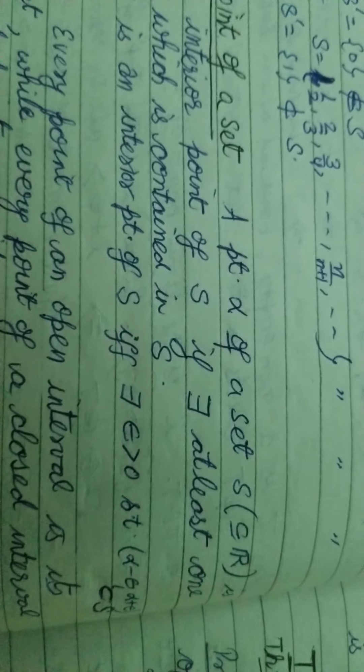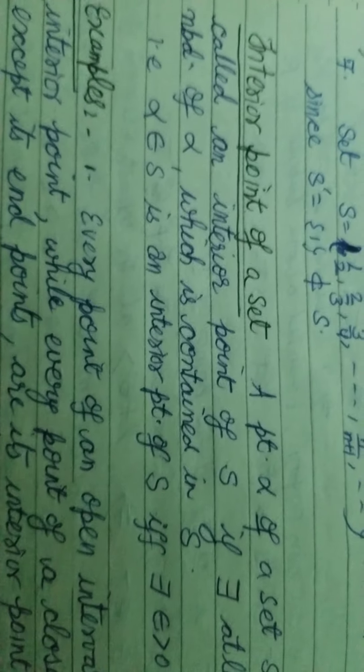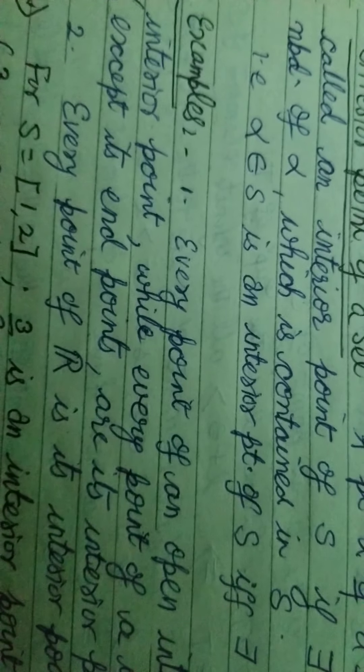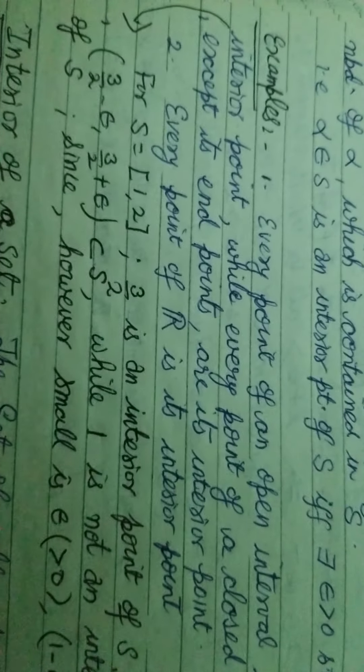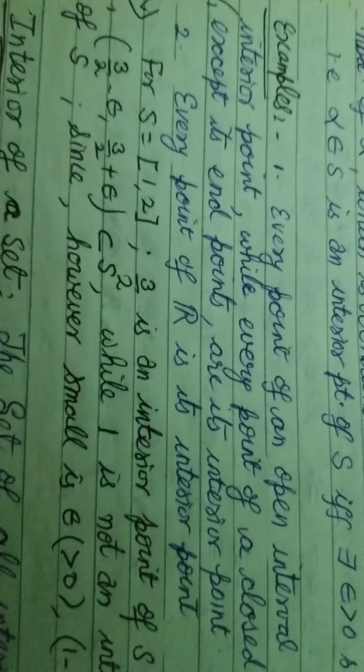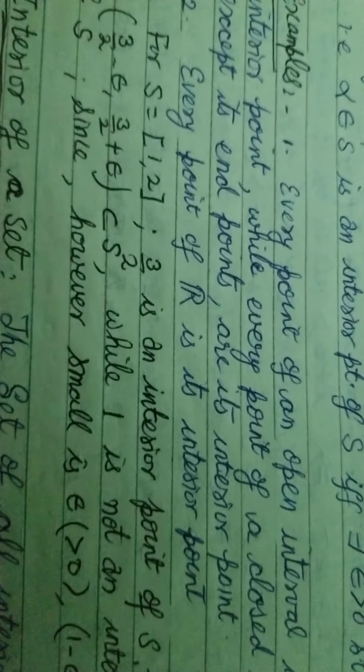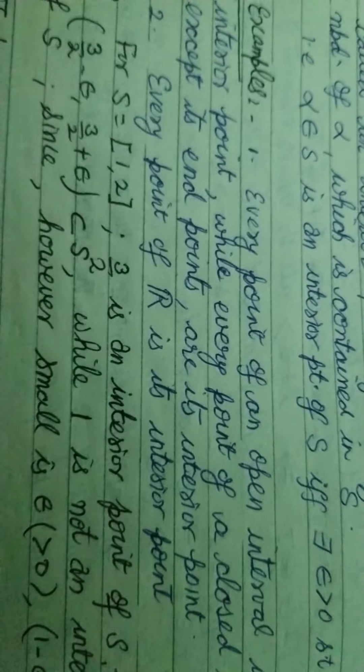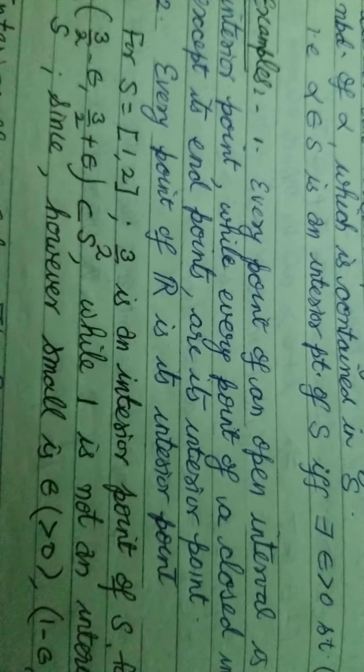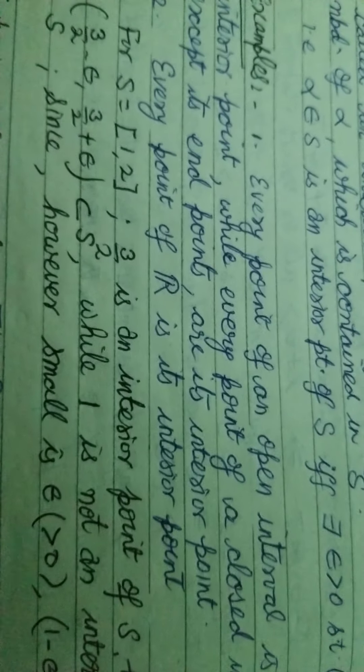Now we come to interior points of a set. A point alpha, an element of set S which is a subset of R, is an interior point of S if there exists at least one neighborhood of alpha which is contained in S. For example, every point of an open interval is its interior point, while every point of a closed interval except the two endpoints are its interior points. The set of interior points is known as the interior of a set, which will be discussed in the next lecture.